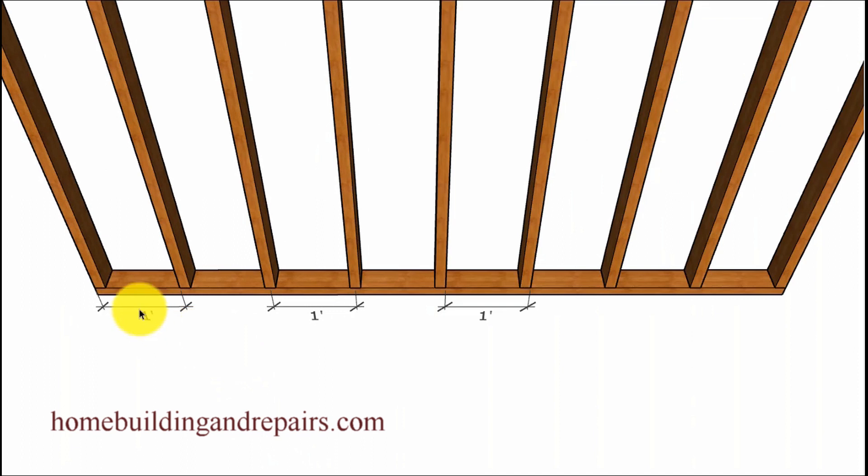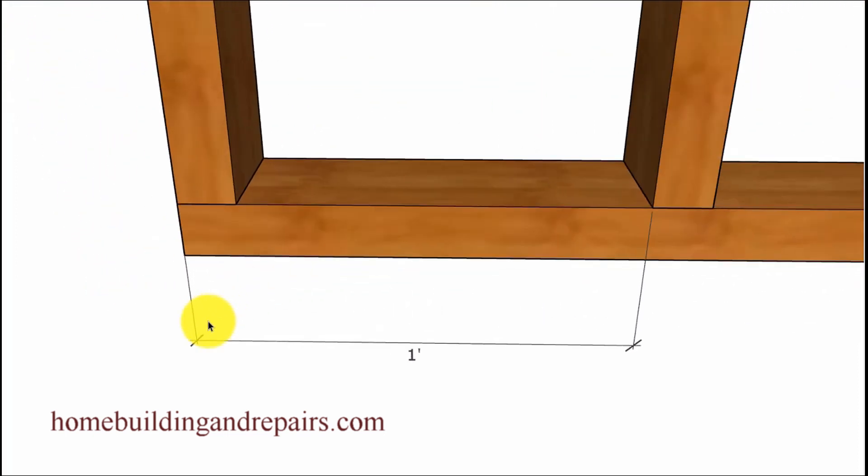In our first example, we have 12 inch on center or one foot on center wall framing studs spacing. And here we have nine studs and this is going to kind of play an important role. And this isn't going to be a very common measurement. 16 inches on center is the most common. But I wanted to give you an idea of what the on center measurements are.